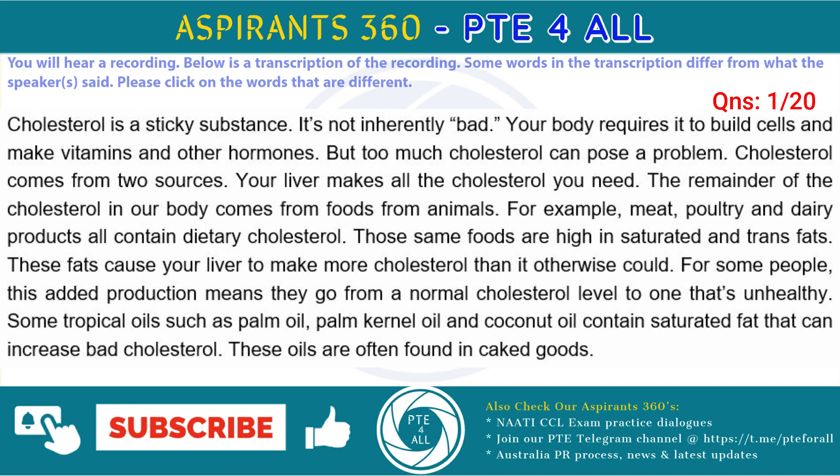Those same foods are high in saturated and trans fats. These fats cause your liver to make more cholesterol than it otherwise would. For some people, this added production means they go from a normal cholesterol level to one that's unhealthy. Some tropical oils such as palm oil, palm kernel oil and coconut oil contain saturated fat that can increase bad cholesterol. These oils are often found in baked goods.